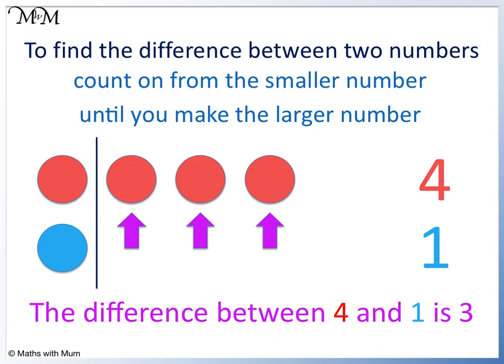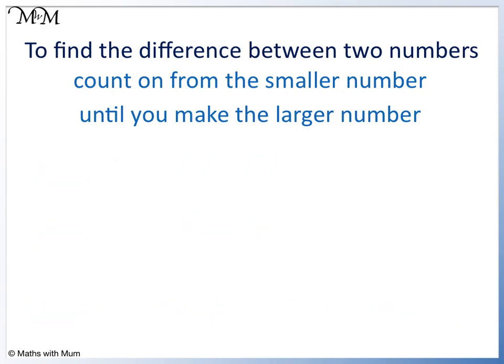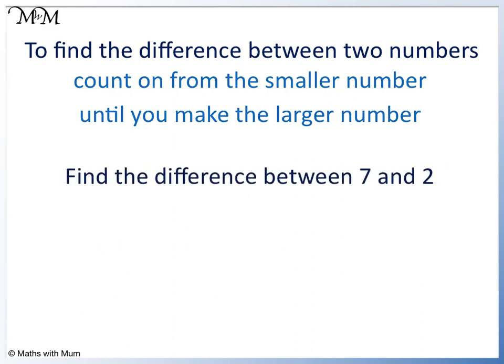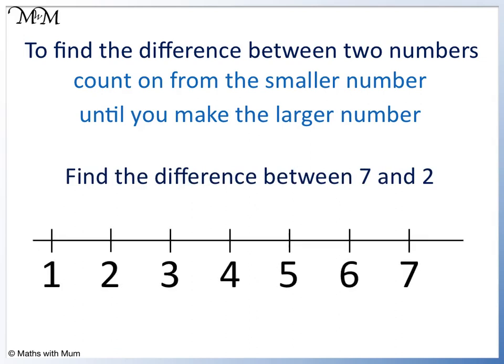Counters are useful for visualising two numbers. We can also use number lines. Find the difference between 7 and 2. We mark both numbers and count on from the smaller number.